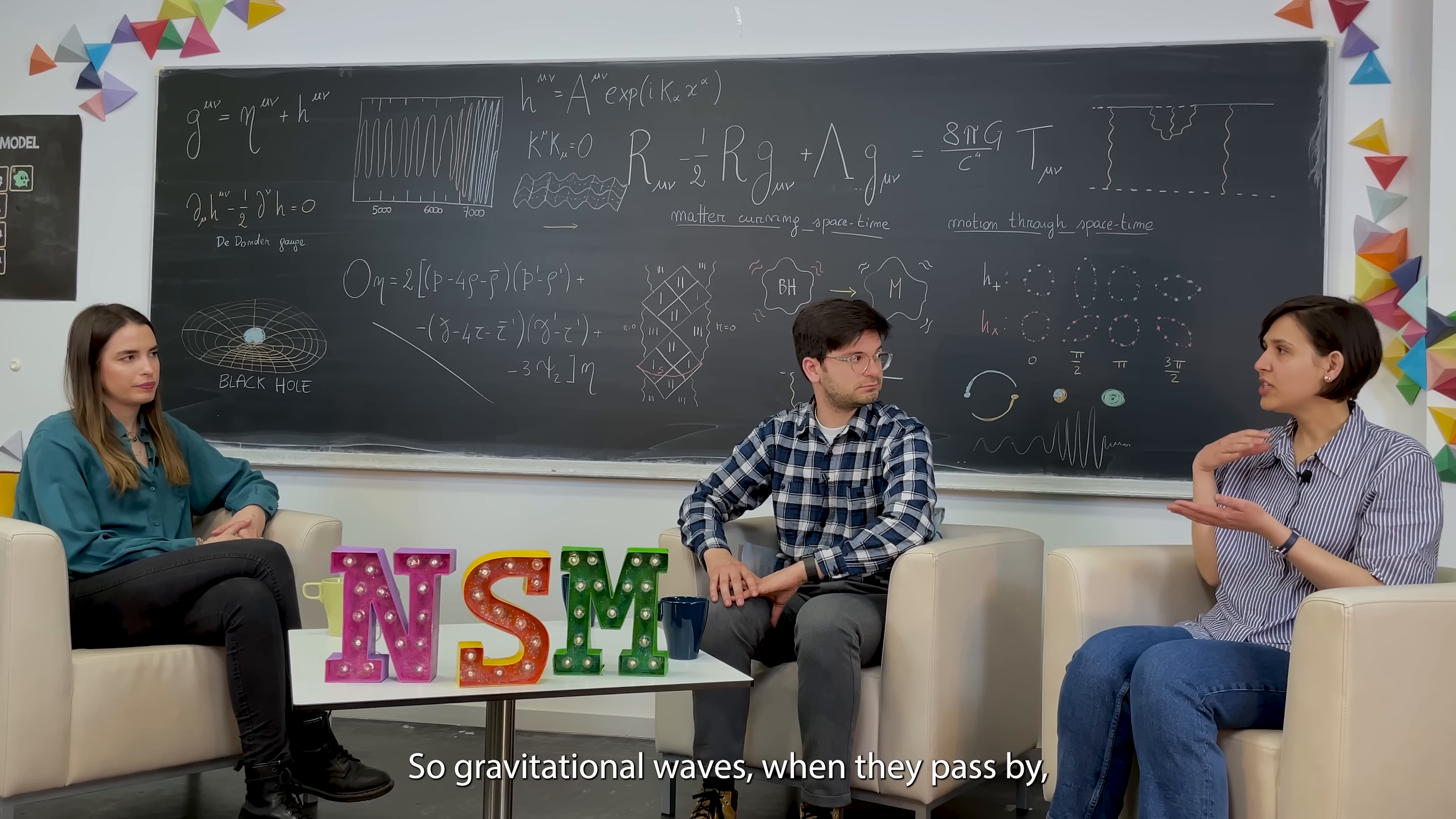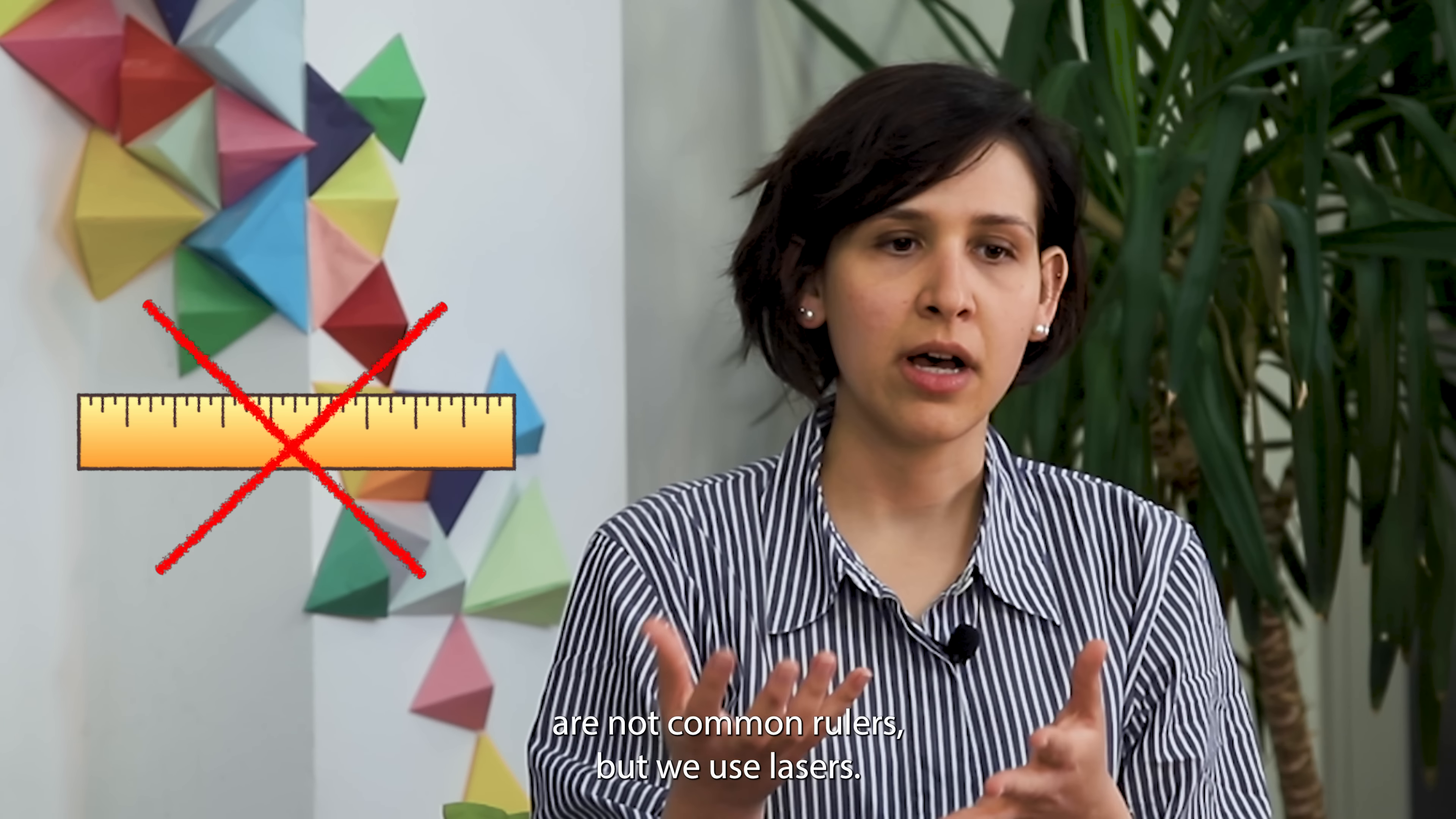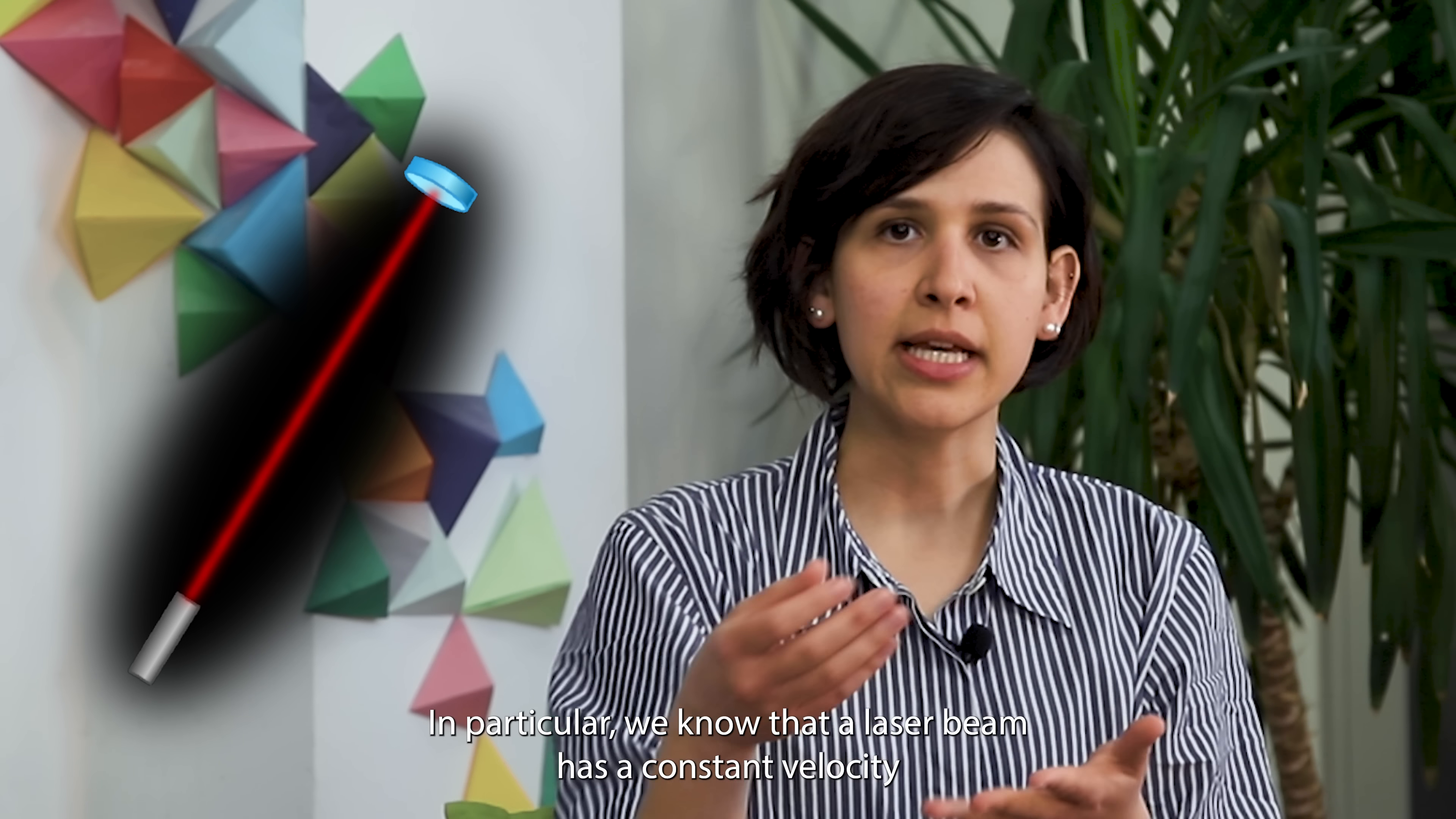By the time they arrive on Earth, these gravitational waves tend to be very weak. Could you remind us Elisa, how exactly do we detect these waves if they're so weak? Gravitational waves, when they pass by, distort the spacetime. This means that the distances change, even if this change is very tiny. What we use to measure a gravitational wave are not common rulers, but we use lasers. In particular, we know that a laser beam has a constant velocity and we can measure the time that the beam takes from one point to another. In particular, the LIGO interferometers have four kilometer long tunnels, and we use a technique called laser interferometry to detect the gravitational waves.